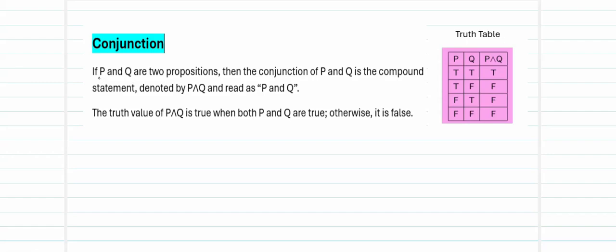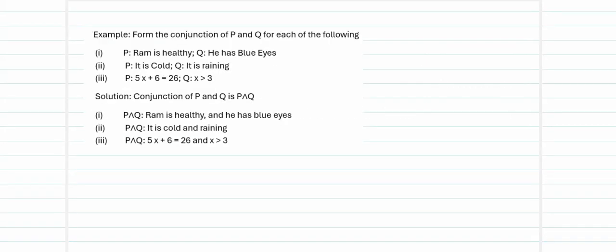The next connective is conjunction. If P and Q are two propositions, their conjunction is the compound statement denoted P ∧ Q, read as 'P and Q.' Its truth table is true only when both P and Q are true; in all other cases it is false. For example: P = 'Ram is healthy,' Q = 'He has blue eyes' → P ∧ Q = 'Ram is healthy and he has blue eyes.' P = 'It is cold,' Q = 'It is raining' → 'It is cold and raining.' P = '5x + 6 = 26,' Q = 'x > 3' → '5x + 6 = 26 and x > 3.'